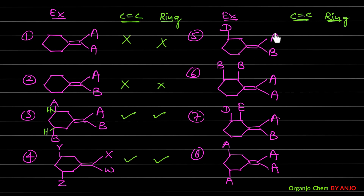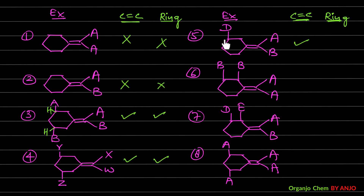Example 5: The SP2 carbons have different groups — on one carbon, D is present; on the other, two hydrogens. These parts are treated as different, so the C=C fulfills the GI condition. For the ring, only one carbon has D and H (disubstituted SP3), but we need at least two such carbons. No second disubstituted carbon is found, so this molecule cannot show GI from the ring.